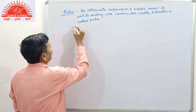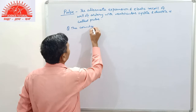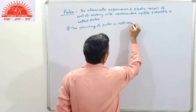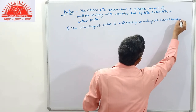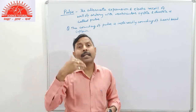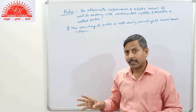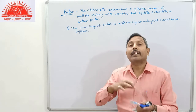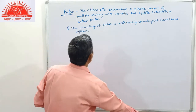The counting of pulse is indirectly the counting of heart beat. As many times as the left ventricle contracts, a jerk is experienced by the wall of the artery, giving us the pulse rate. Hence, counting of pulse is indirectly counting of heart beat. The pulse is experienced on the radial artery.